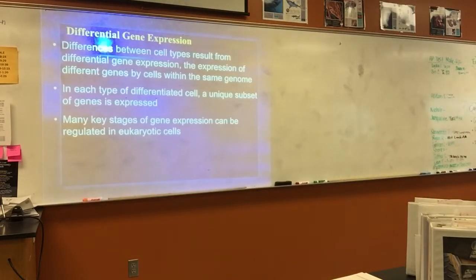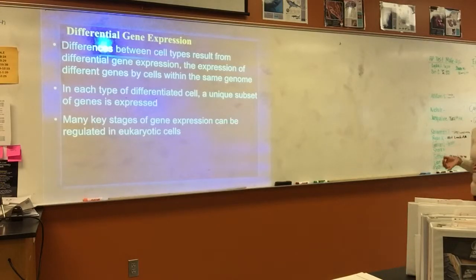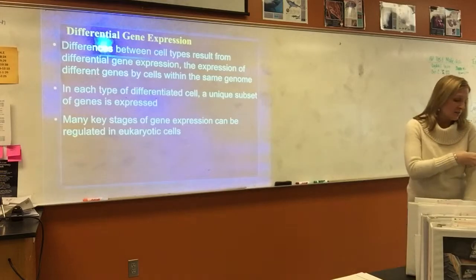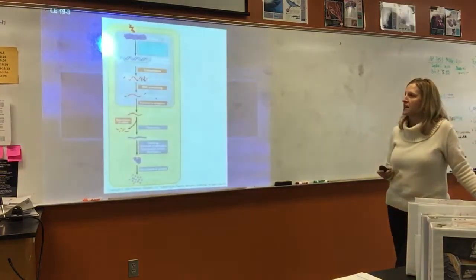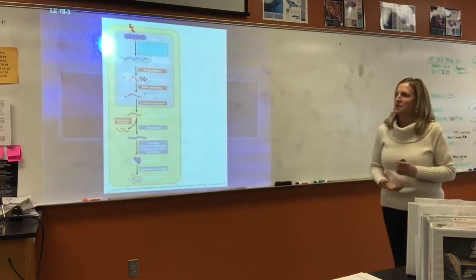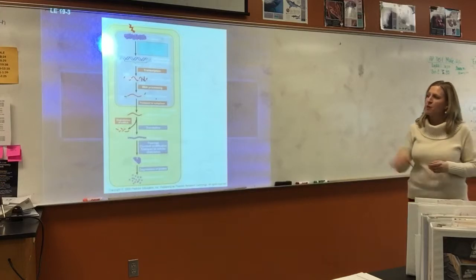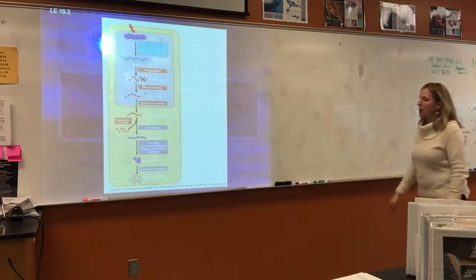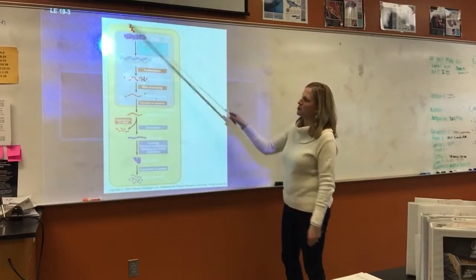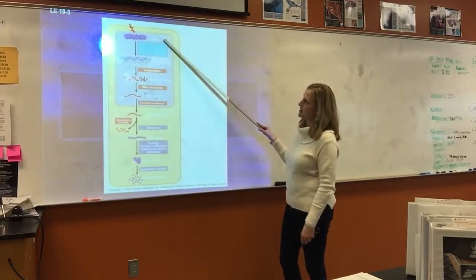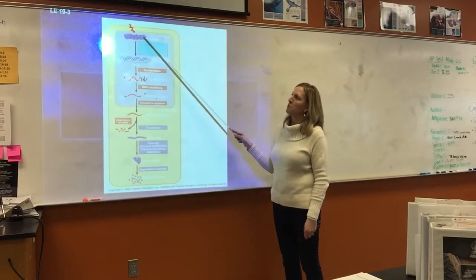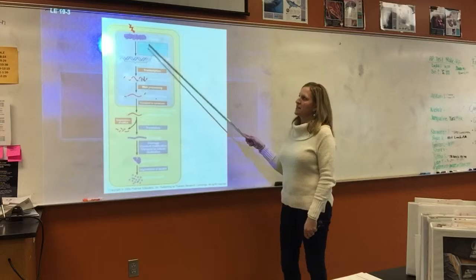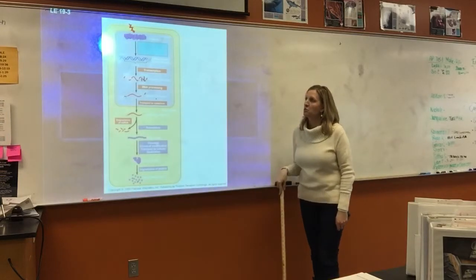There are different stages that can be regulated in eukaryotic cells when we look at gene expression. For eukaryotic cells, it's a little more in-depth than in prokaryotic cells. In this picture, most of which is a review from Chapter 17, this is protein synthesis. You have your cell, your nucleus, and your chromatin — the DNA wrapped around the histone protein.